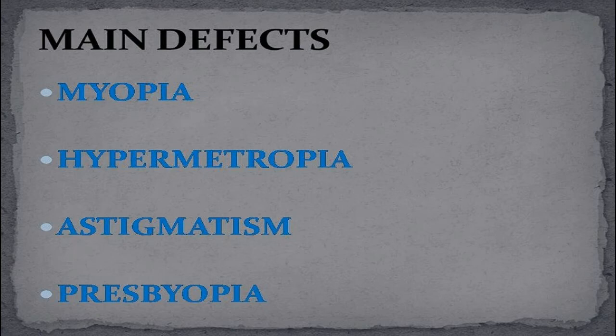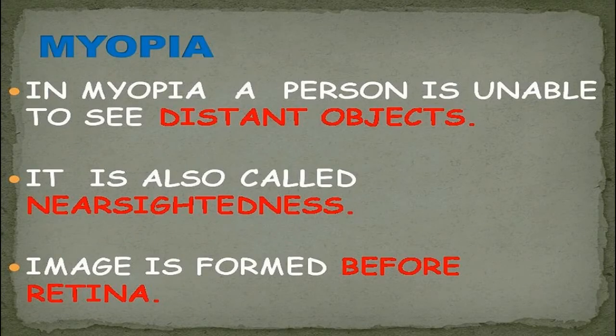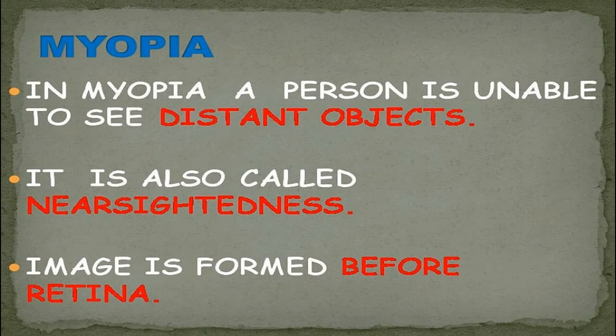First of all, myopia. In myopia, a person is unable to see distant objects but can clearly see nearby objects. Myopia is also called near-sightedness. In myopia, the image is formed before the retina.